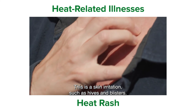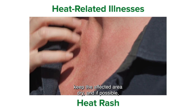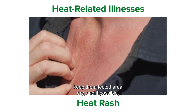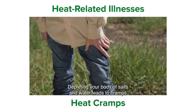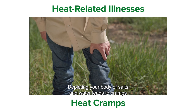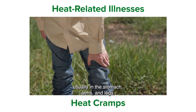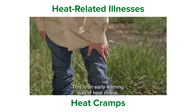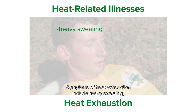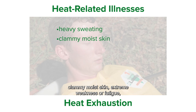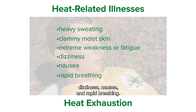If you develop a skin irritation, keep the affected area dry and, if possible, change your work environment. Heat cramps: depleting your body of salts and water leads to cramps, usually in the stomach, arms, and legs — this is an early warning sign of heat illness. Symptoms of heat exhaustion include heavy sweating, clammy moist skin, extreme weakness or fatigue, dizziness, nausea, and rapid breathing. Heat exhaustion can become a heat stroke.